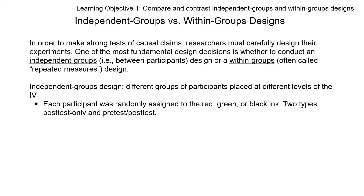Independent groups design uses different groups of participants. Let's say you've got two treatment conditions — you're giving drug A and drug B. You give different groups that have no pairing mechanism, no matching at all between the two different groups. So there's no way to draw a parallel between any one participant in the first group and any one participant in the second group. You're still drawing parallels between group one and group two as a whole, but there's not a direct linkage for individual participants.